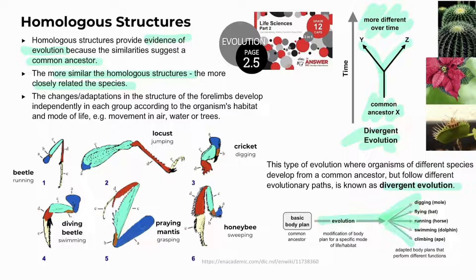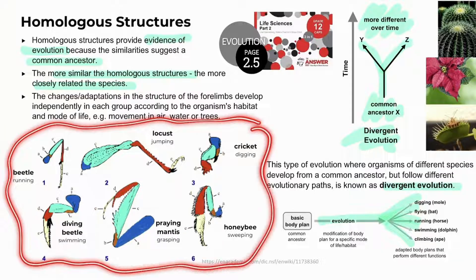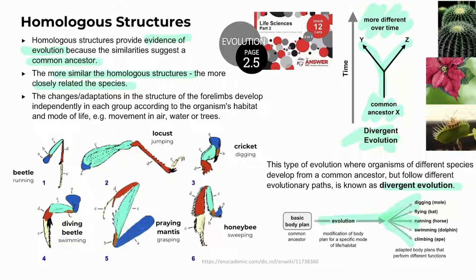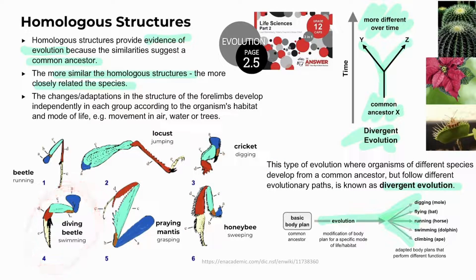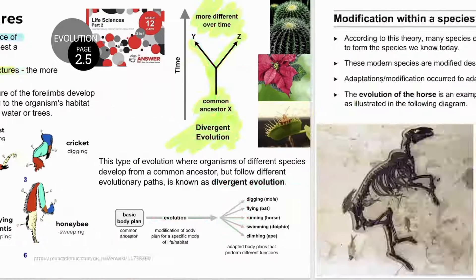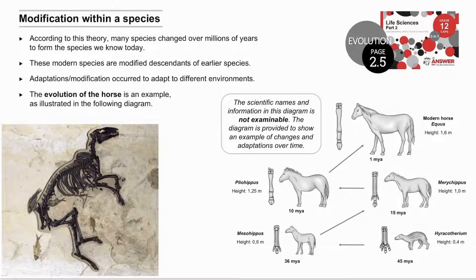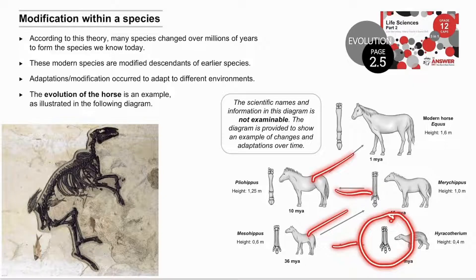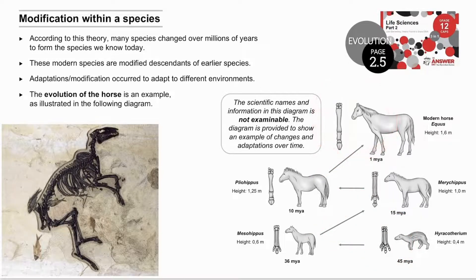Another example of homologous structures is seen in modified limbs in insects, where the same structure is modified for different functions in different habitats — adapted for digging in the cricket or diving in the beetle. Similarly, modified leaves in plants serve different functions: preventing water loss, forming colourful petals, or catching insects. Modification within a species is illustrated in horse evolution, where a four-toed fossil is modified over time to form the single-toed modern horse adapted for speed.